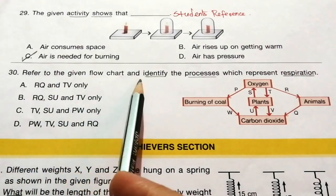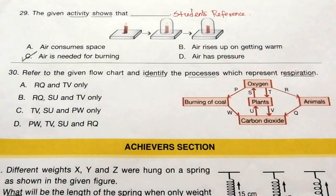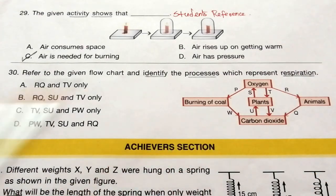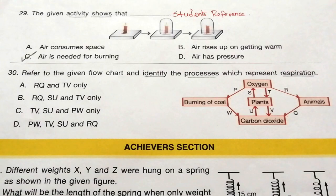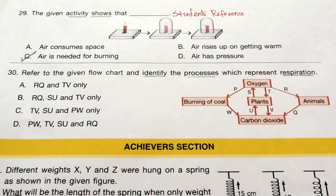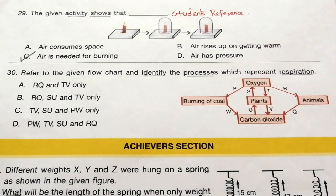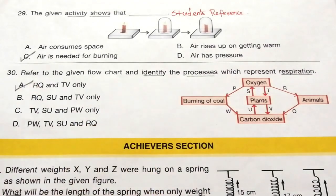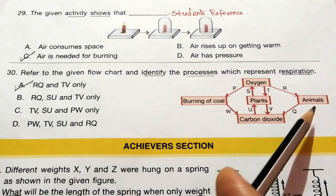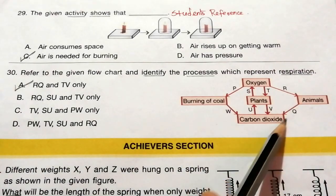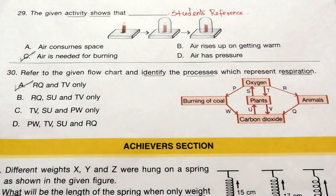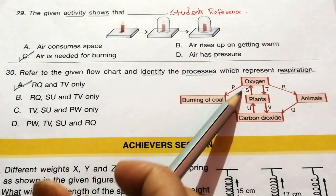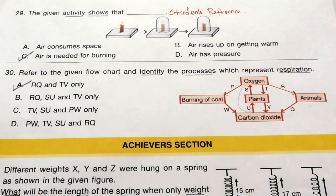Question 30: Refer to the given flowchart and identify the processes which represent respiration. Respiration means breathing in oxygen and breathing out carbon dioxide. Animals breathe in R and breathe out Q. Plants breathe in T and breathe out V. So the correct answer is A — R, Q and T, V only. S and U represent photosynthesis, not respiration.